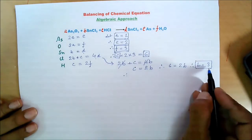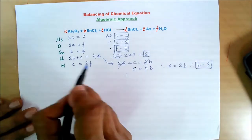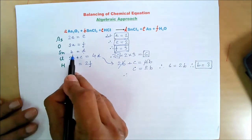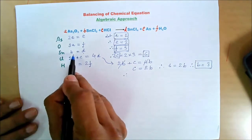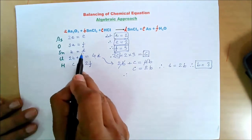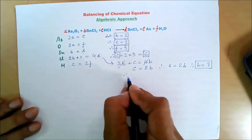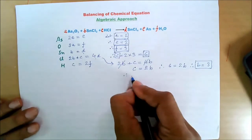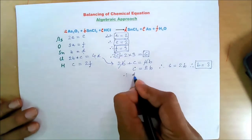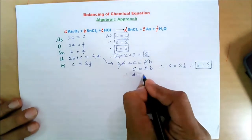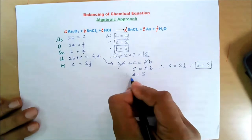When B = 3, and since B = D, therefore D also becomes 3.